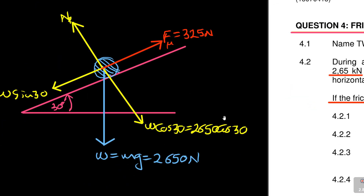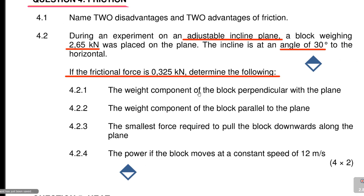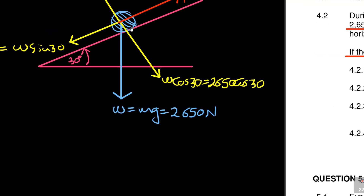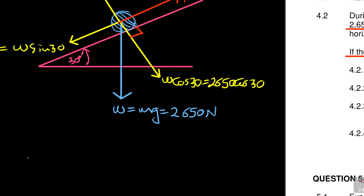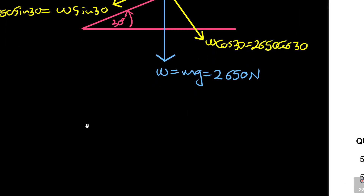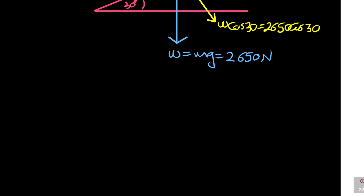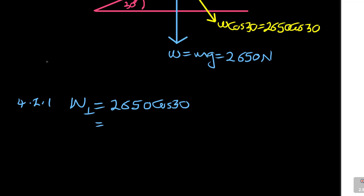Now if you've done this, the question comes out straight. Question 4.2.1 asks for the weight component of the block perpendicular to the plane. Look at the perpendicular to the plane — that's 90 degrees to the plane. They are referring to the W cos 30 component. So the answer: weight perpendicular equals 2,650 cos 30.